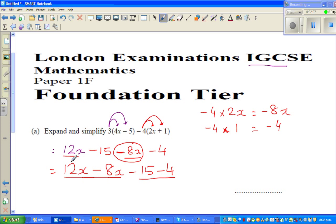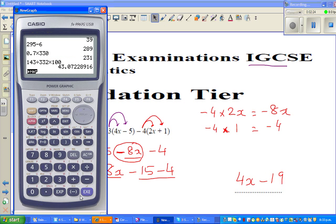This is 12 lots of x take away 8 lots of x, which is 4 lots of x. Then you go to minus 15 minus 4. If you're not sure, you can use a calculator. Minus 15 minus 4 is minus 19.